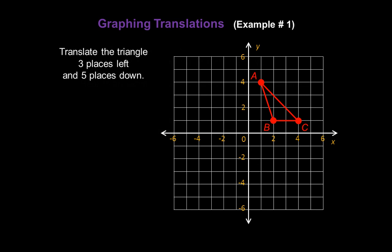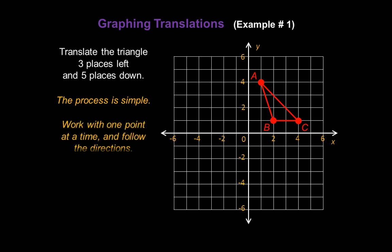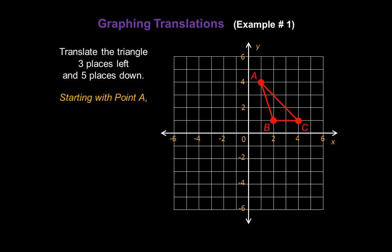Let's take a look at an example of graphing a translation. Let's translate this triangle three places left and five places down. The process is simple — we're going to work with one point at a time and follow the directions. Let's start with point A. We're going to move it three places to the left: one, two, three.